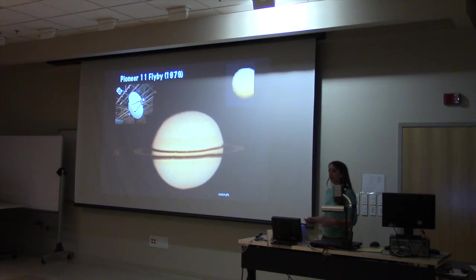But these are really the first close images that we ever got of these objects in the outer solar system. This was before Hubble, where you got these really nice pictures of these objects as well.